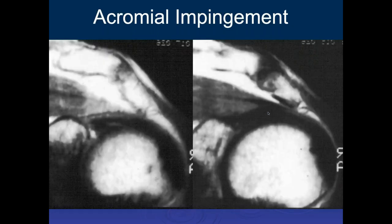Worth noting: Neer wrote his article on acromioplasty before MRI and before arthroscopy was widespread—published around 1983. Arthroscopy was available but not MRI, and neither was in widespread use the way they would be a year or two later.